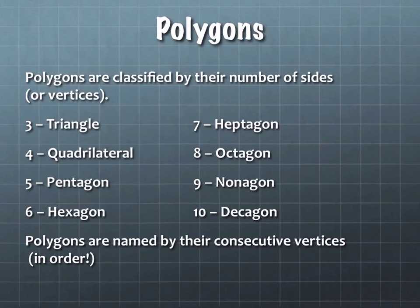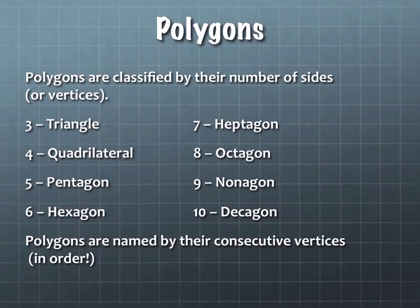When we name a polygon, we name it by its vertices in order — consecutively, going around the shape in one continuous motion. You can't bounce around to different vertices because if you went in a different order, you would create things that weren't simple and closed, and simple and closed is required in order to be a polygon.